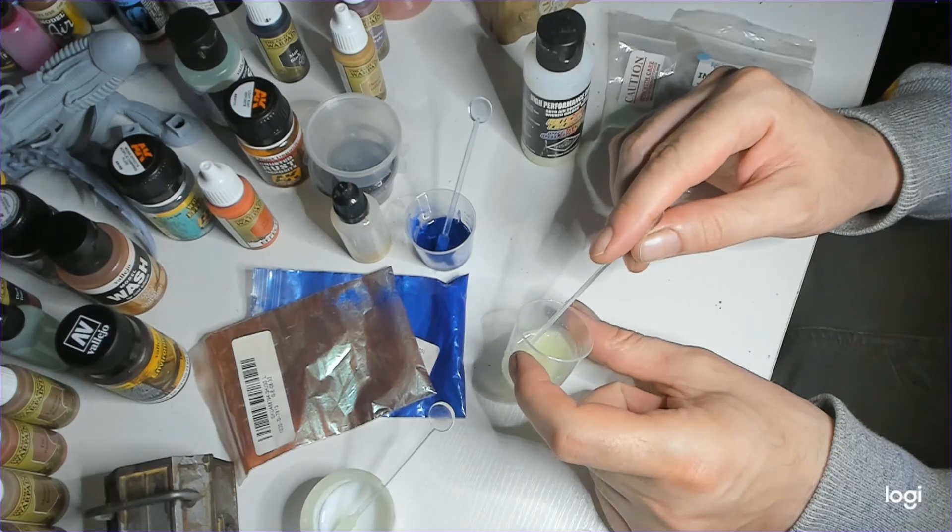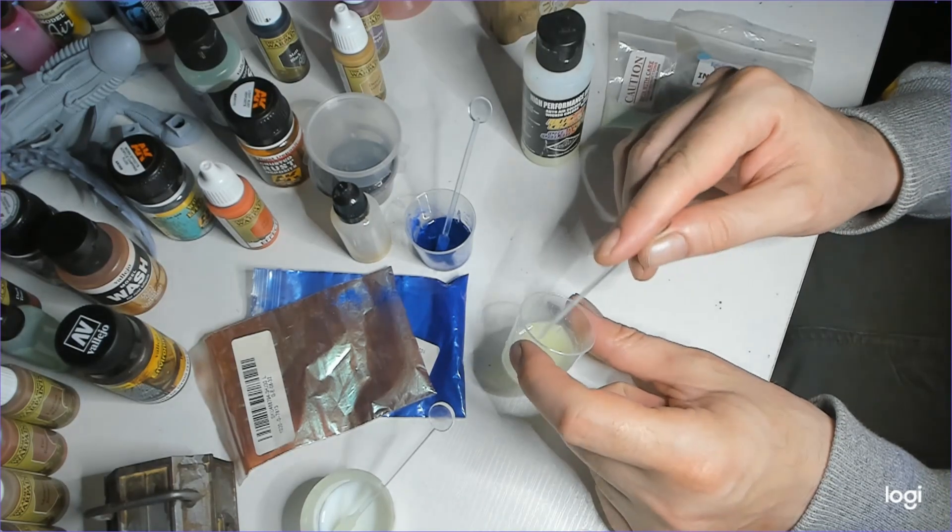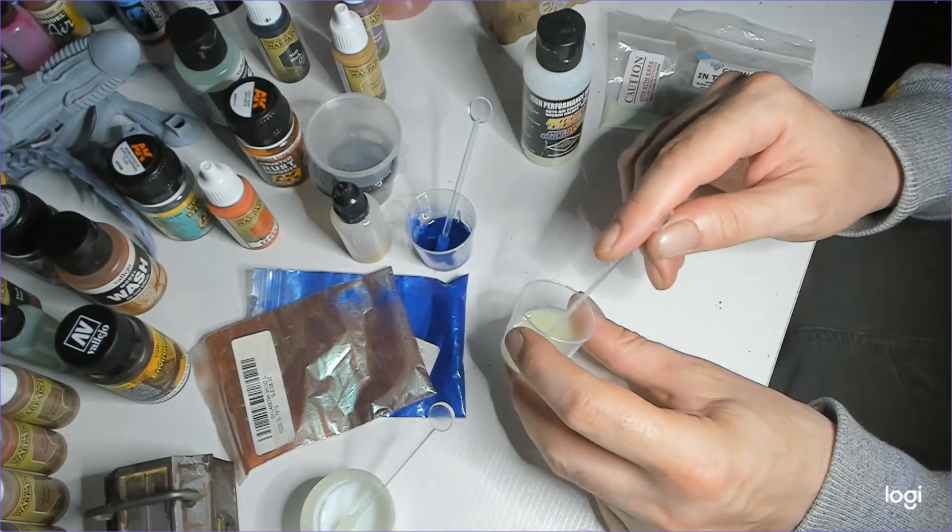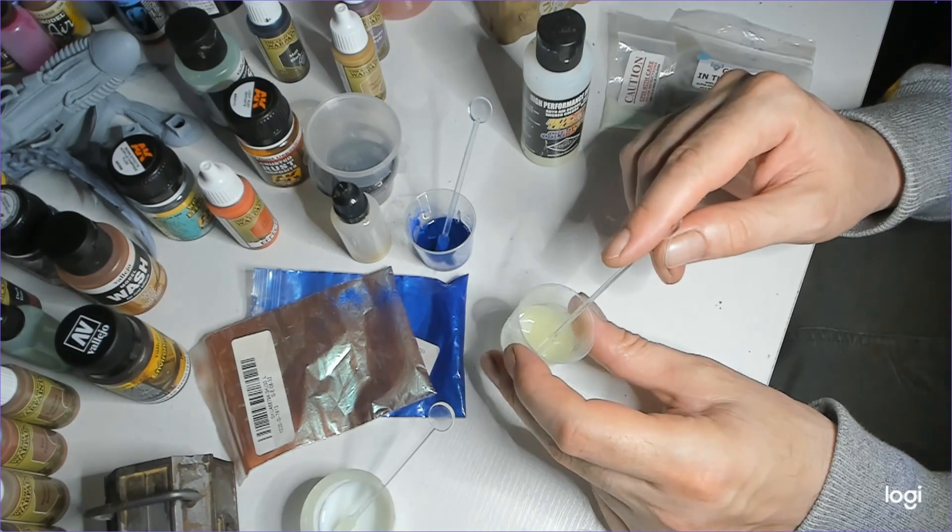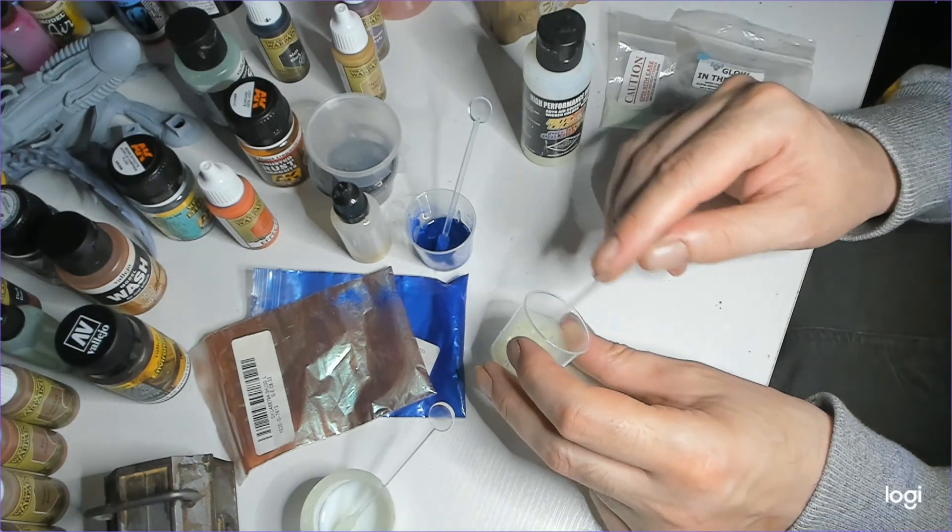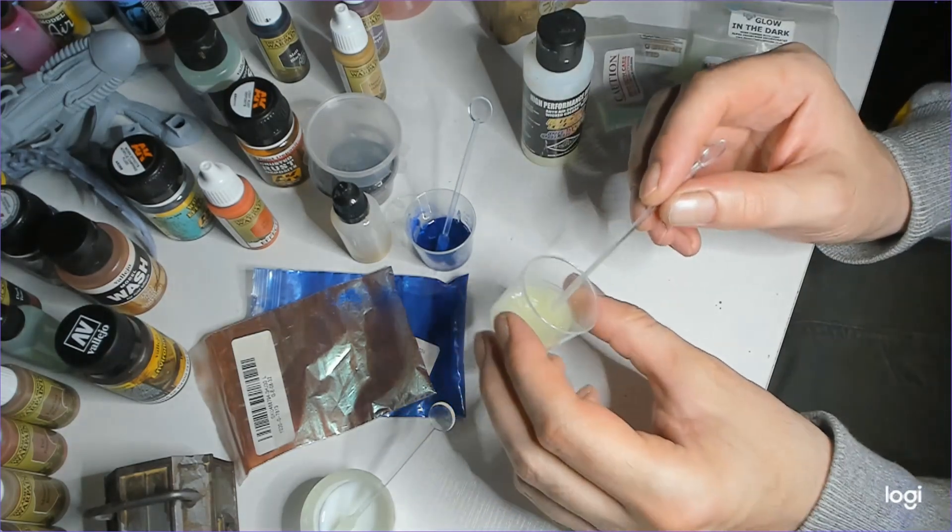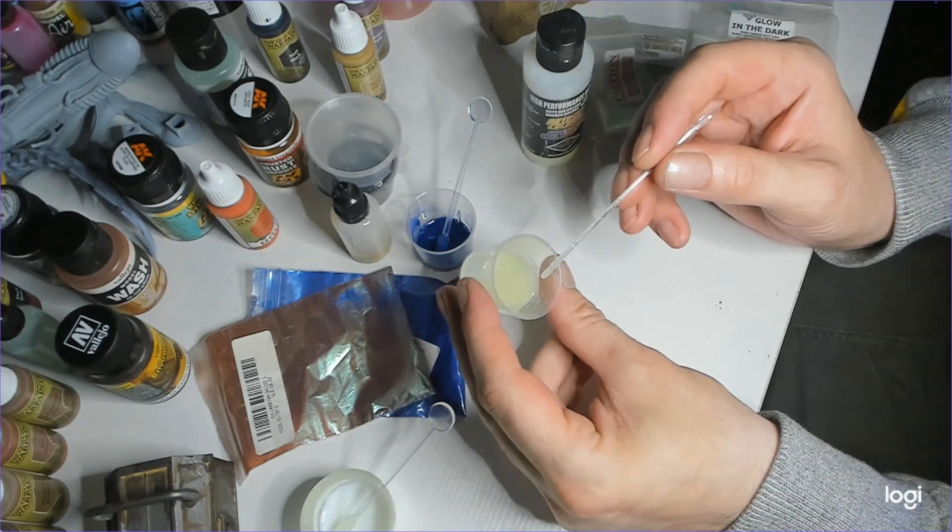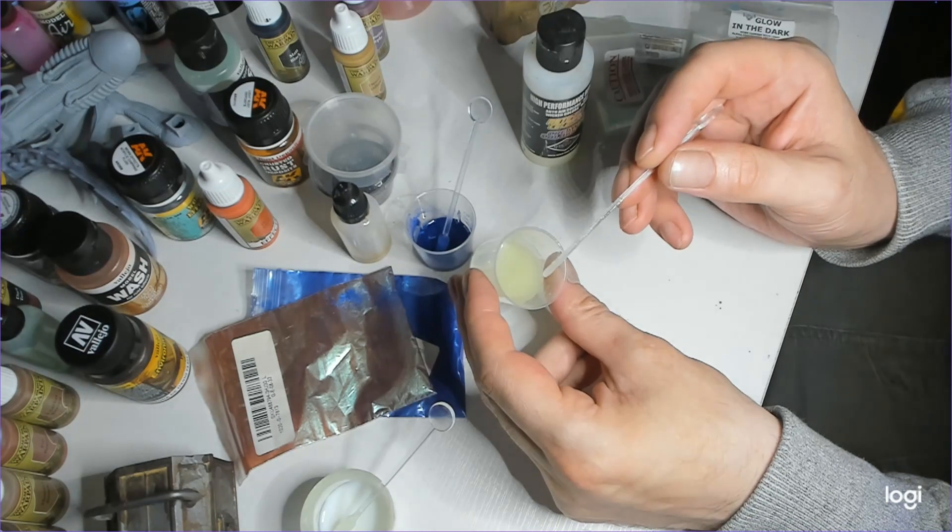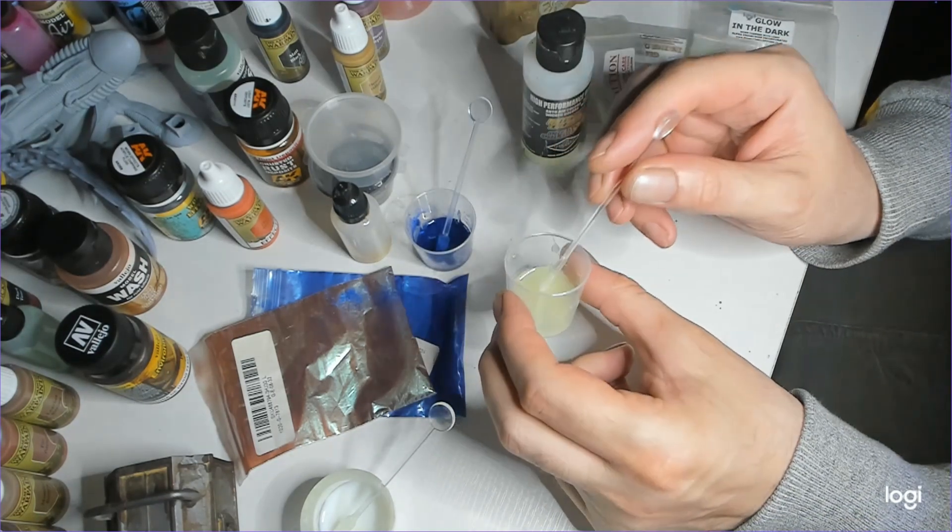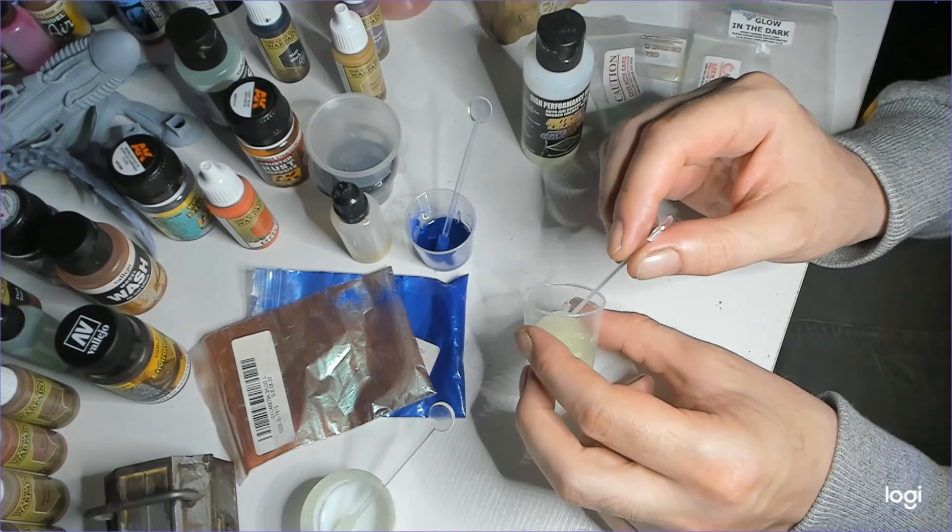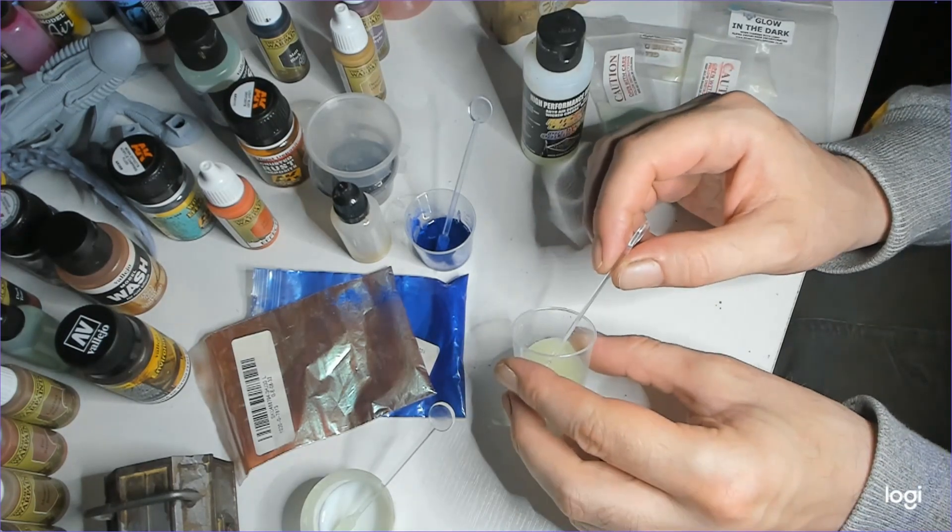I find that the more you do it, the more of the Lit gets dissolved into the resin. Once you've got it to this sort of greenish consistency, you want to let that settle. Once you've let it settle, pour it off. So pour it off into another container.